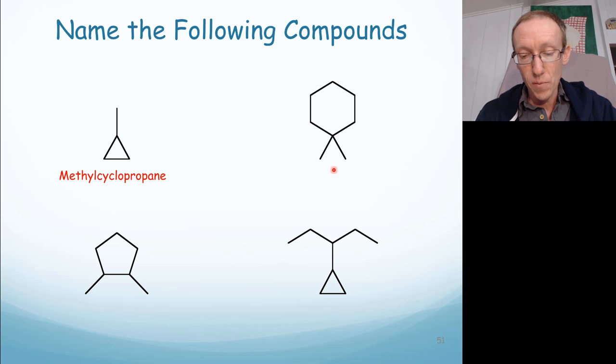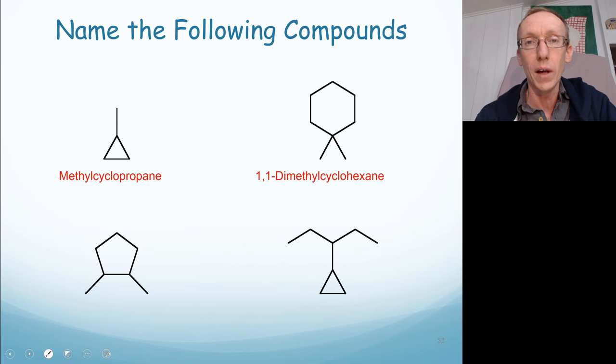Now, we're going to have to number this because if we've got two methyl groups, we could have one methyl group on this carbon and another methyl group on a different carbon. So dimethylcyclohexane doesn't tell us which positions those methyl groups are on. So when we name this compound, we need numbers. It's 1,1-dimethylcyclohexane.